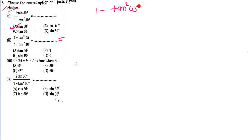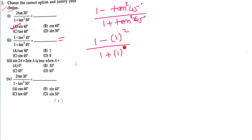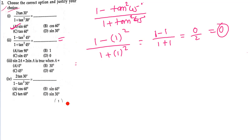Second MCQ: (1 − tan²45) / (1 + tan²45). tan45 = 1, so tan²45 = 1. Numerator = 1 − 1 = 0, denominator = 1 + 1 = 2. So the answer is 0/2 = 0. Checking options: tan90 is undefined, sin45 and 1 are not 0. The answer is 0.